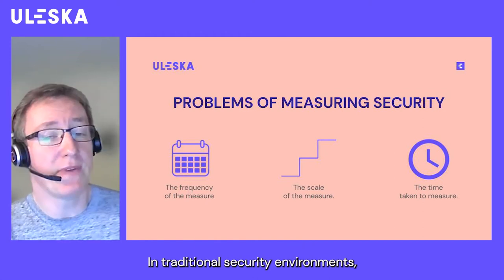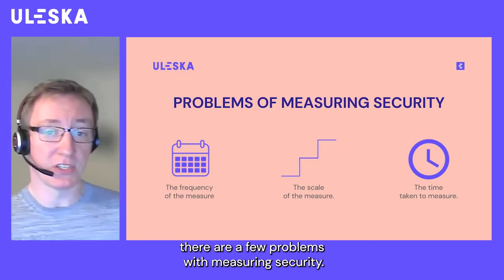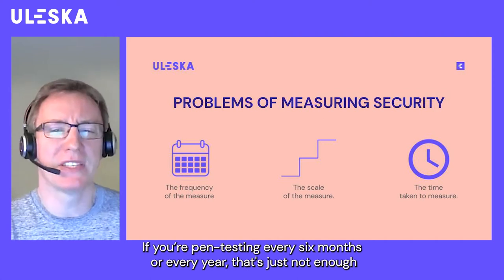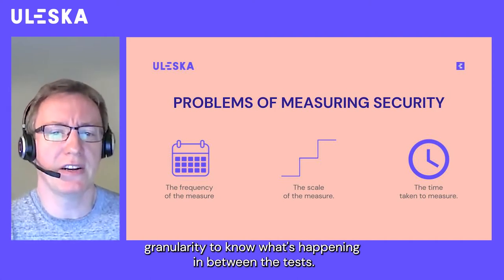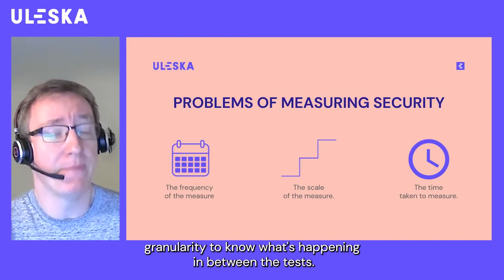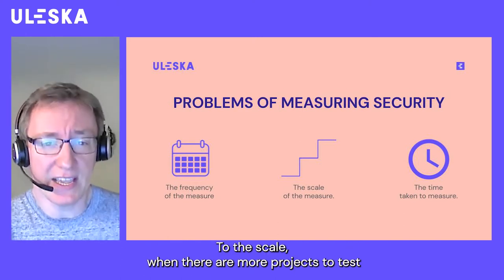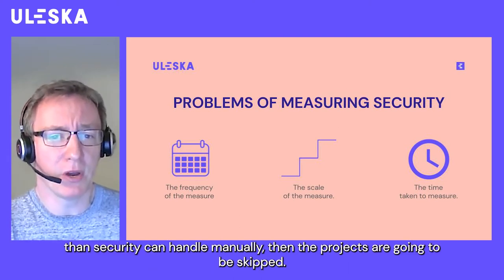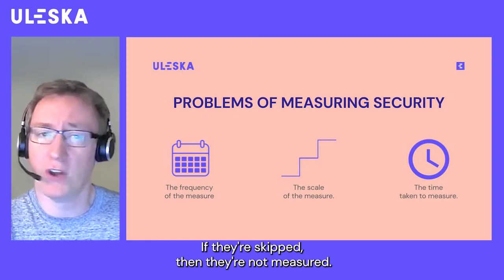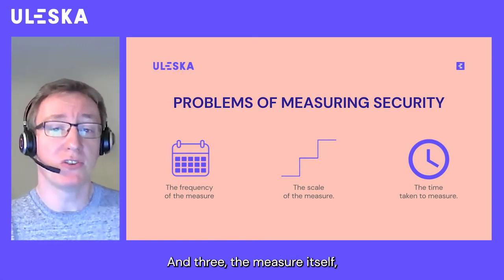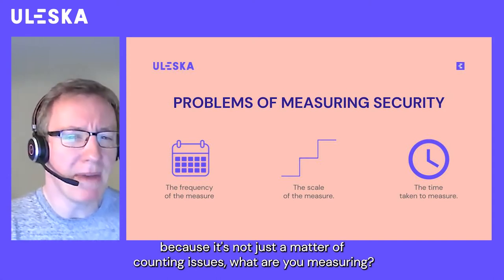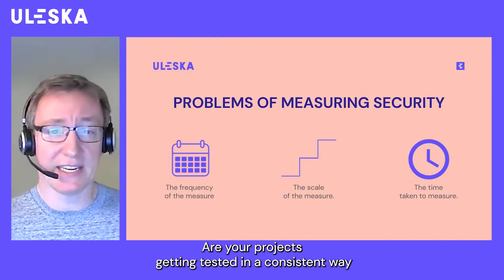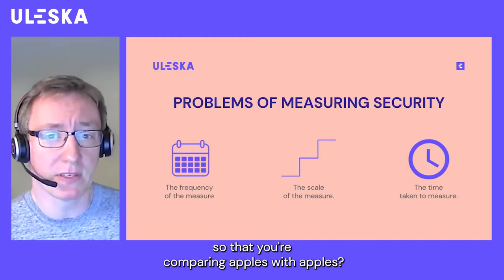In traditional security environments, there are a few problems with measuring security. One: frequency — if you're pen testing every six months or every year, that's just not enough granularity to know what's happening between tests. Two: scale — when there are more projects to test than security can handle manually, projects get skipped, and if they're skipped, they're not measured. And three: the measure itself — because it's not just a matter of counting issues. Are your projects being tested in a consistent way so that you're comparing apples with apples?